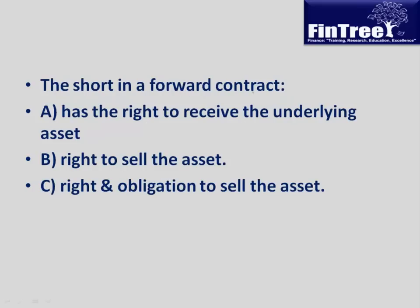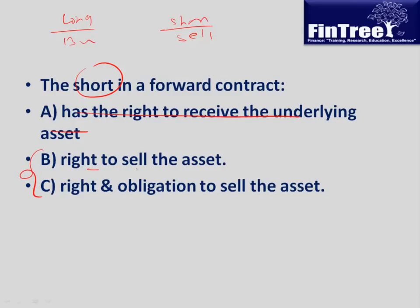Question 2: The short in a forward contract — does it have (A) the right to receive the underlying asset, (B) the right to sell the asset, or (C) the right and obligation to sell the asset? The long promises to buy and the short promises to sell, so the short will not receive the asset — option A is not the answer. We need to decide whether short only has a right, or has both right and obligation.